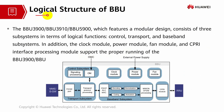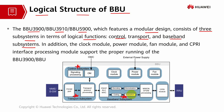Let's go through the logical structure of BBU. The BBU, which is divided into several categories — 3900 series, 3910, and 5900 series — has a modular design that consists of three subsystems in terms of logical functions: the control subsystem, the transport subsystem, and the baseband subsystem. In addition, there is a clock module, power module, fan module, and CPRI interface to support the running of the BBU module.